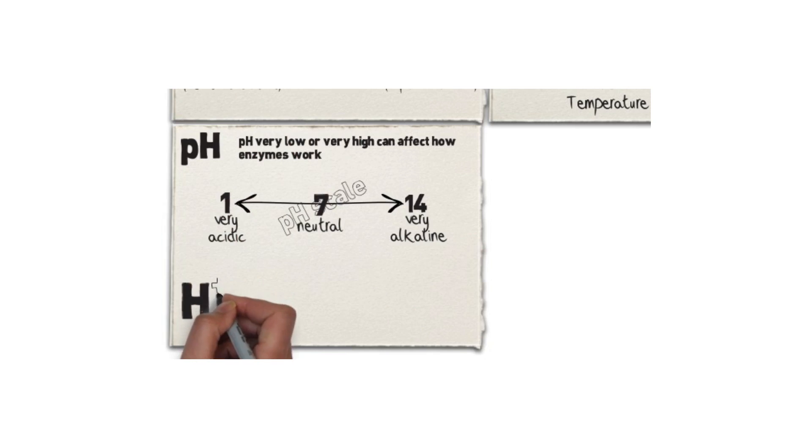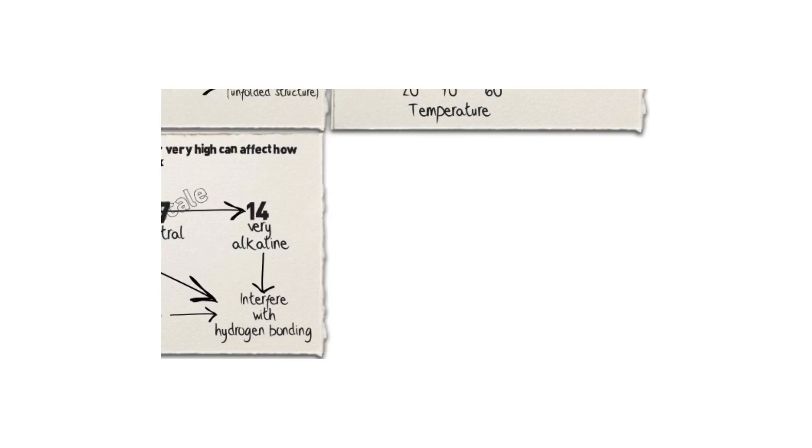Hydrogen ions, or H-plus ions as it is commonly written, that are released from acids and accepted by bases, interfere with hydrogen bonding. By altering the concentration of hydrogen ions, it is possible to affect how enzymes work.